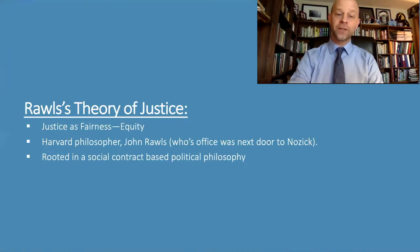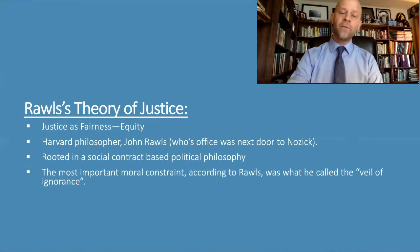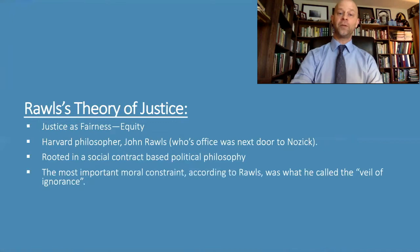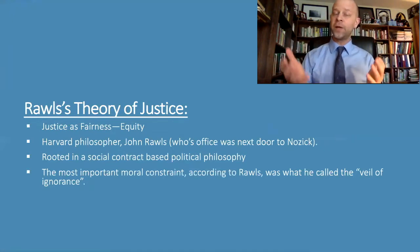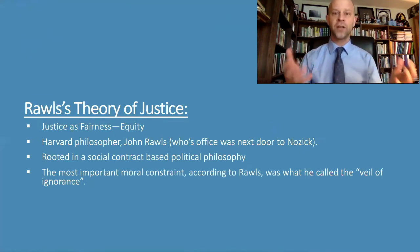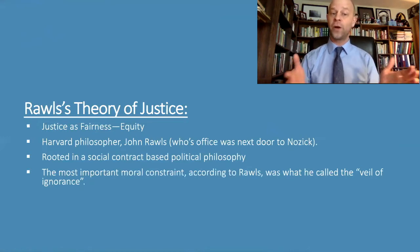For Rawls's theory of justice, the most fundamental moral constraint he thought was important was what he described as the veil of ignorance. The veil of ignorance is quite simple to understand. Think about Lady Liberty — she is supposed to be blind to justice, weighing the scales of what's right and wrong, good and bad, just and unjust, fair and unfair, and not able to pay attention to anything that would sway that decision in one way or another.